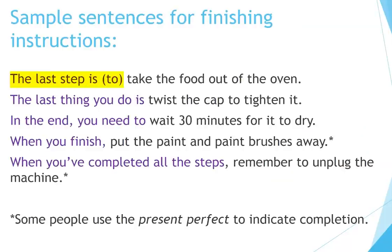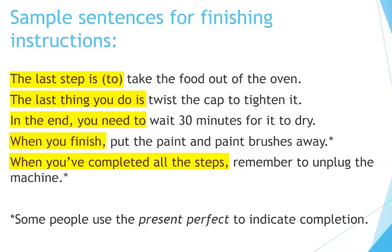Sample sentences for finishing instructions: 'The last step is to take the food out of the oven.' 'The last thing you do is twist the cap to tighten it.' 'In the end, you need to wait 30 minutes for it to dry.' 'When you finish, put the paint and paint brushes away.' 'When you've completed all the steps, remember to unplug the machine.' Some people use the present perfect to indicate completion.